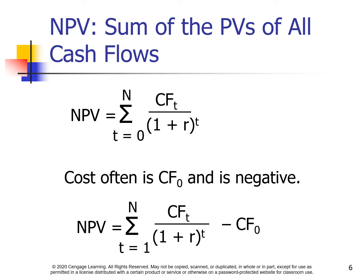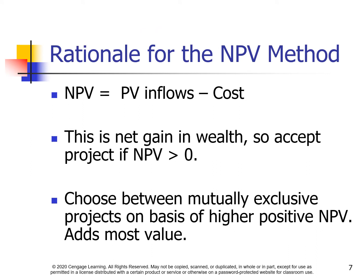The NPV method, or net present value method, is the sum of the present values of all cash flows. We can use the following formula. Cost often is cash flow zero, which is negative. NPV equals the present value of all inflows minus cost — this is the net gain in wealth. Accept the project if NPV is greater than zero. Choose between mutually exclusive projects on the basis of the higher positive NPV, as it adds the most value.